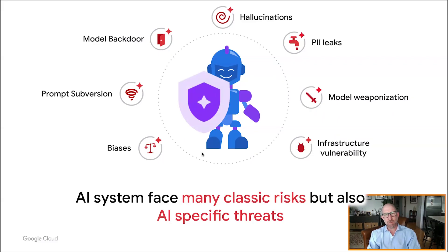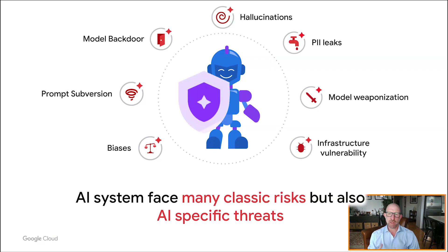Some of these AI-specific risks — and they're not just confined to generative AI — include hallucinations, where models produce inaccurate content for the context in which they're being used. And there are many constructs for different types of use cases that can ground and improve the accuracy of responses. The settings and control of this should be carefully selected depending on the end use case.